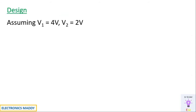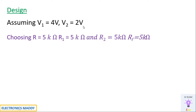Every design starts with a requirement or assumption. In this design, we assume V1 equals 4 volts and V2 equals 2 volts respectively. We choose all resistor values to be equal — say 5 kilohms. However, you can try different values as well.